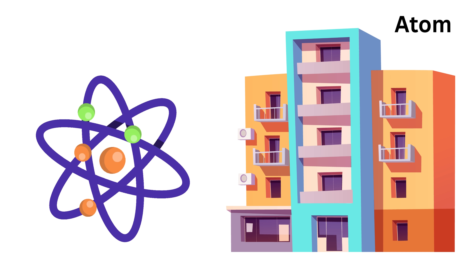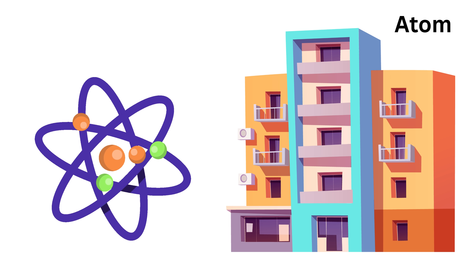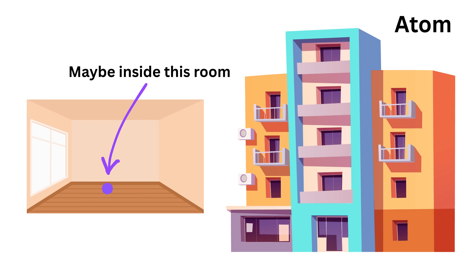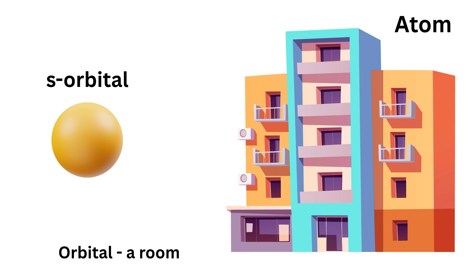In reality, as per quantum physics, electrons behave more like guests moving around inside a room rather than marbles circling a center. You can't point to one exact spot and say that the electron is right there, because it keeps shifting around within its space. Instead, you can only say that an electron is most likely somewhere inside this particular room.